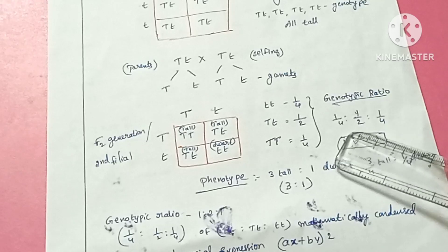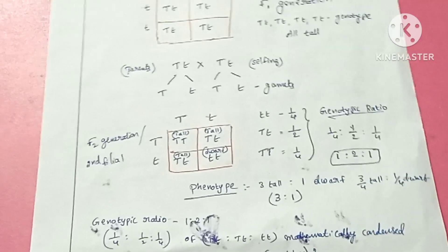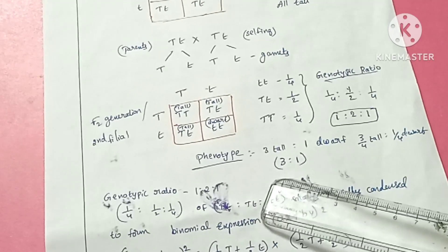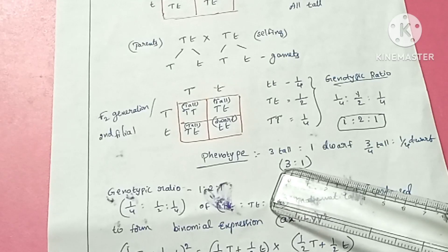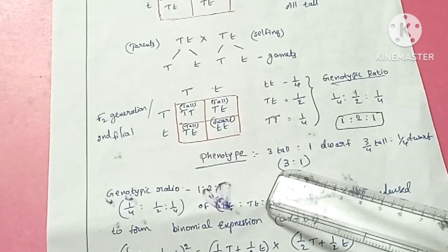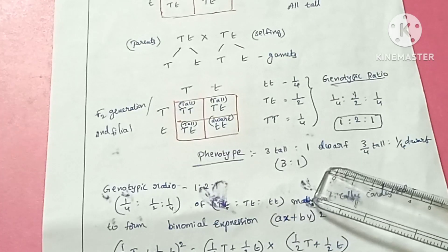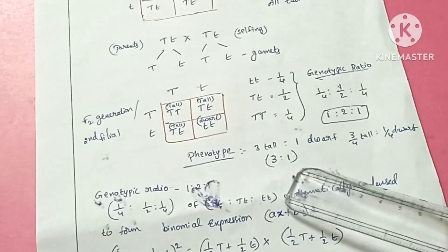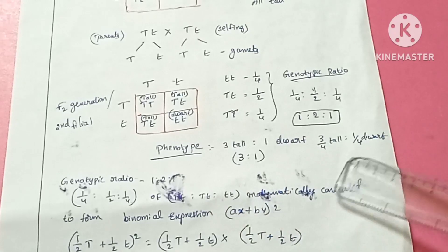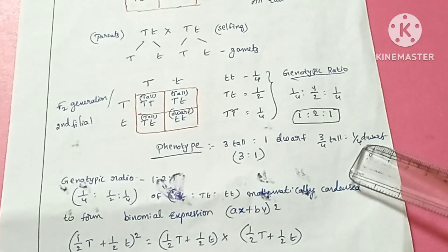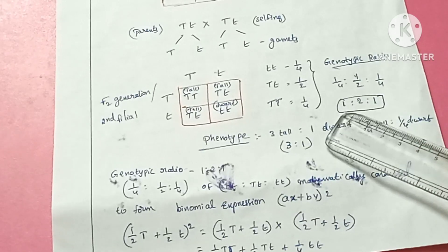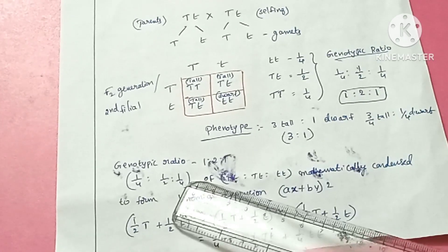The genotypic ratio is 1:2:1 — that is, 1 out of 4 capital T capital T, 2 out of 4 capital T small t, and 1 out of 4 small t small t. The phenotypic ratio — meaning physical appearance — is 3 tall plants to 1 dwarf plant, that is 3:1. Out of 4, 3 are tall plants and 1 is a dwarf plant.